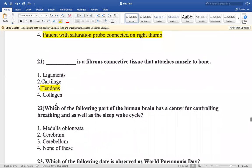Now the next question is: which of the following part of human brain has a center for controlling breathing as well as the sleep-wake cycle? Medulla oblongata, cerebrum, cerebellum, and none of these. The answer is medulla oblongata.